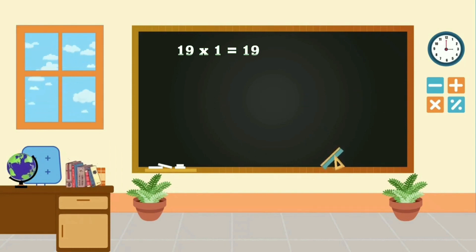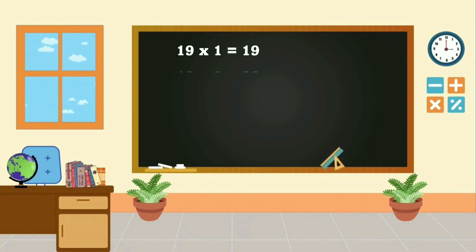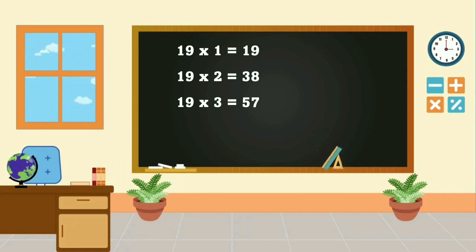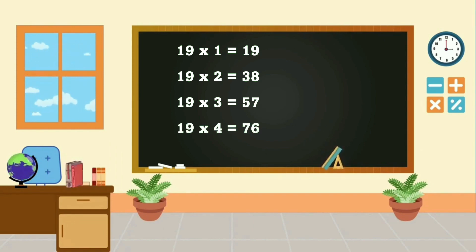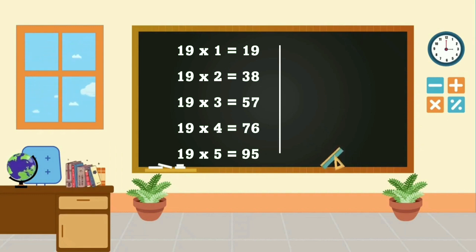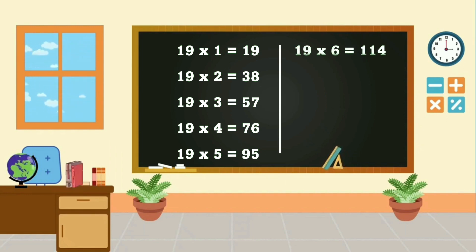19, 1's are 19. 19, 2's are 38. 19, 3's are 57. 19, 4's are 76. 19, 5's are 56. 19, 5's are 95. 19, 6's are 114.